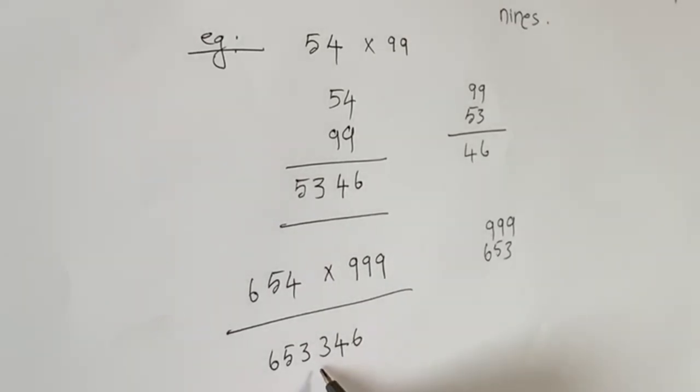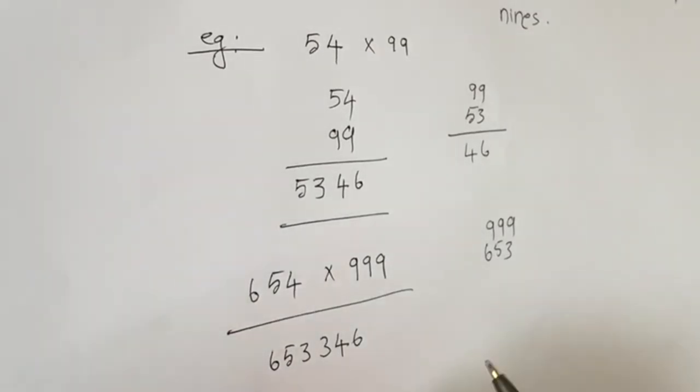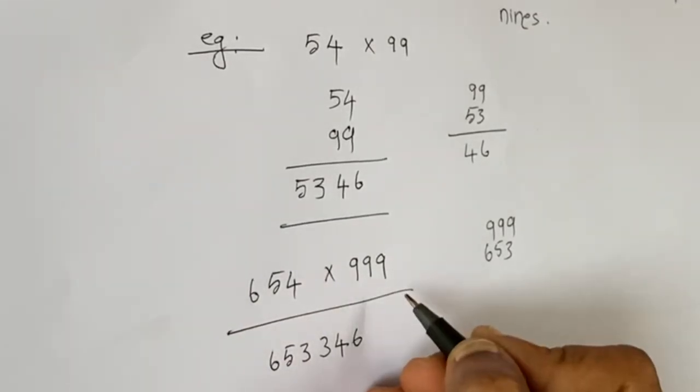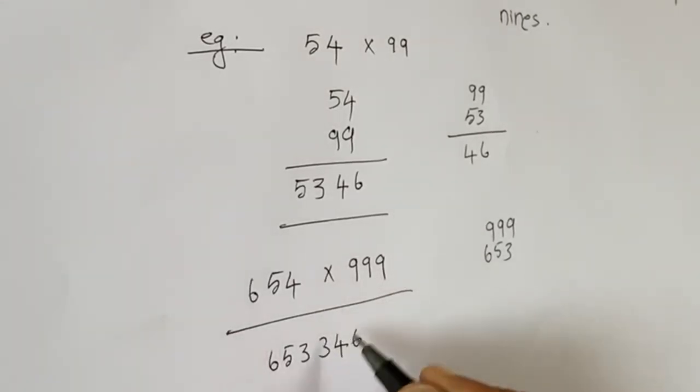So the answer is 653346. This is very easy. It takes time because I am explaining each and every step. If you practice it, you will mentally calculate this.